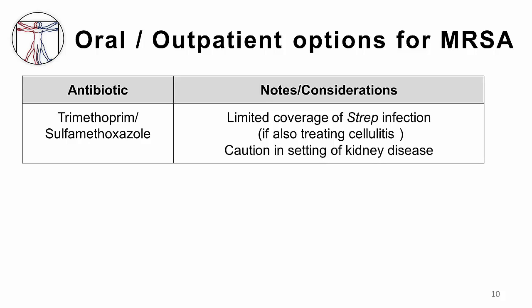Trimethoprim-sulfamethoxazole is one of the first-line oral agents for treating MRSA infection. It is taken twice per day and is generally well tolerated, although higher doses can cause GI upset, such as nausea and vomiting. Unfortunately, this antibiotic does not have reliable coverage against strep species, so it should not be used alone for the treatment of cellulitis. Patients with underlying kidney disease need to be monitored, as this drug can cause elevated levels of potassium in these patients. Prolonged courses of this medication can sometimes lead to bone marrow suppression, manifested as thrombocytopenia, meaning low platelets, leukopenia, and anemia. But this is not typical in patients who are on short courses of therapy.